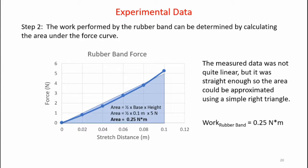Here's the same data put on a force versus stretch distance graph. The data is not quite linear; however, it's close enough that I can approximate the area under the curve using a simple right triangle. Recall that the area under the force versus distance curve is the work being done by the rubber band. If I calculate the area of one-half base times height, I get an area equal to 0.25 Newton meters — that's the work being produced by the rubber band on the cart.